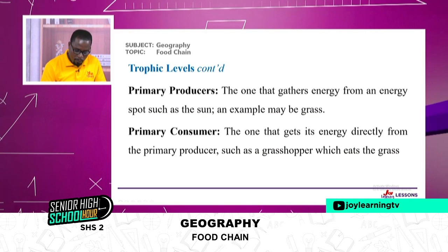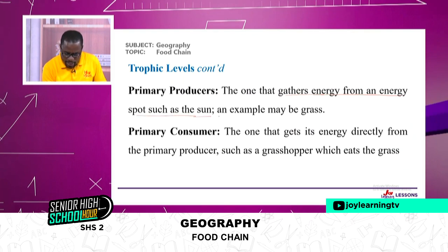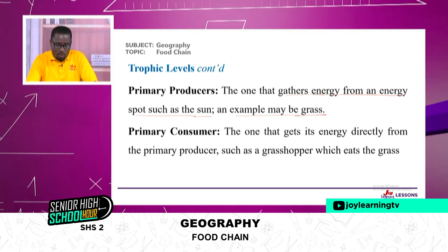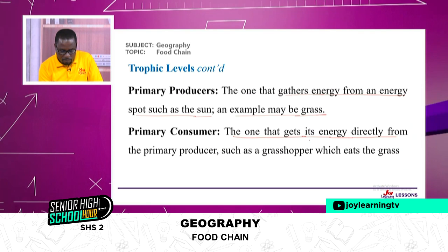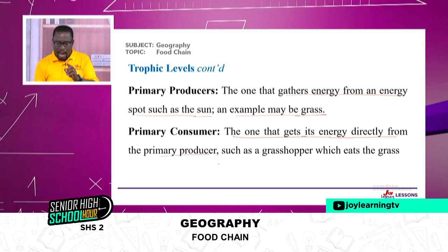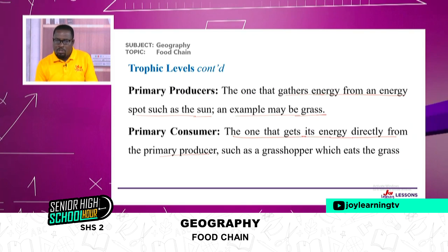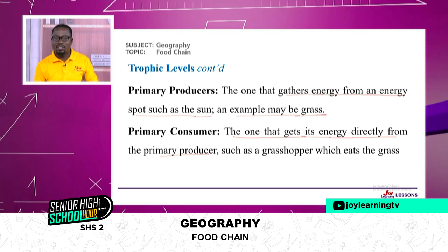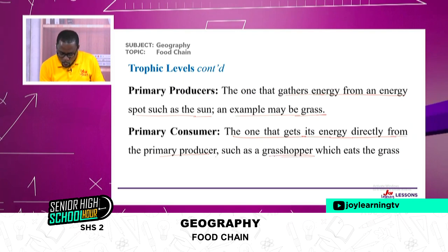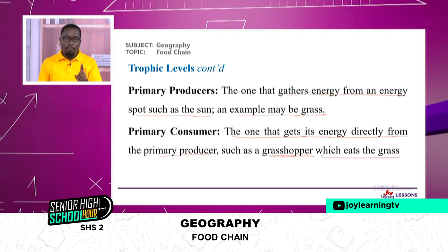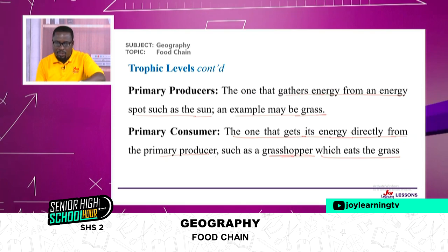Still on trophic levels: primary producers are those that gather energy from an energy source such as the sun — an example is grass. Primary consumers get their energy directly from the primary producer. For example, the grass traps solar energy from the sun to make its own food, but the primary consumer — such as the grasshopper, which eats the grass — doesn't go to the sun; it gets its energy directly from the plant.